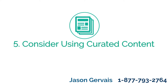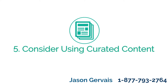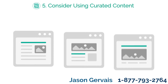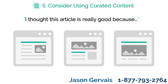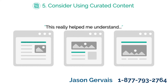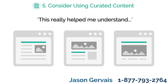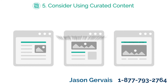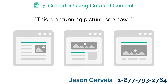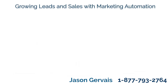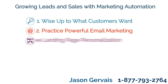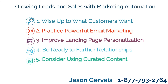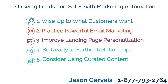Five: consider using curated content. Targeted content is key to the whole marketing automation process. To help, consider curating relevant content from other sources while making sure to put your own twist on it to enhance your message for your audience.